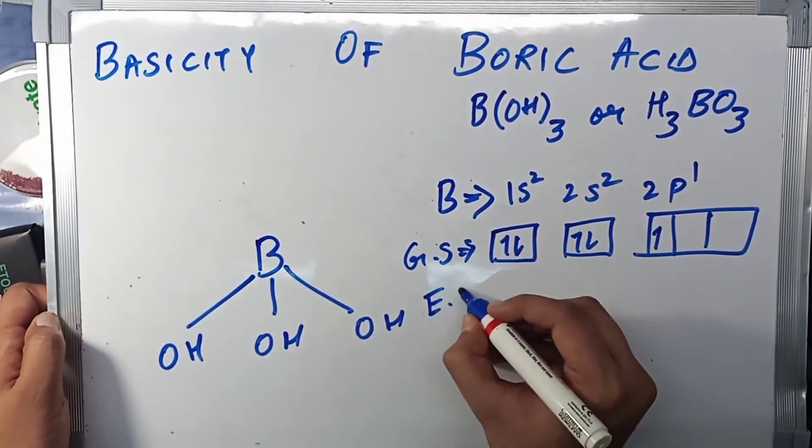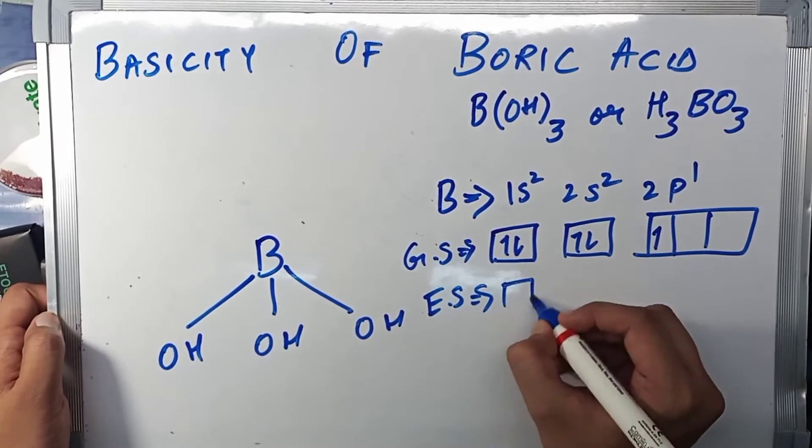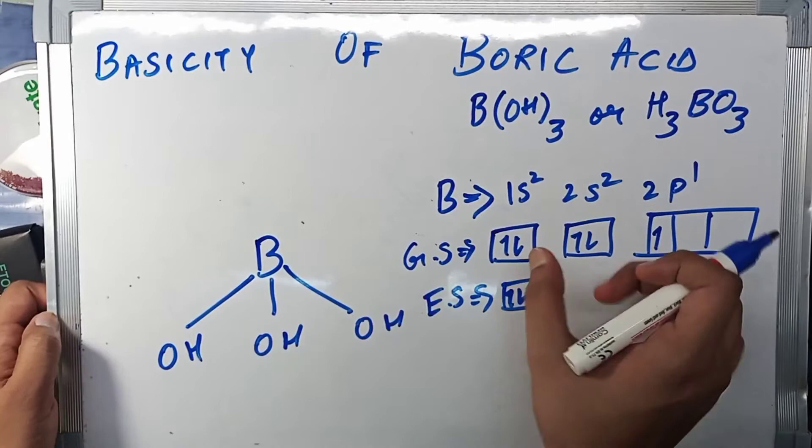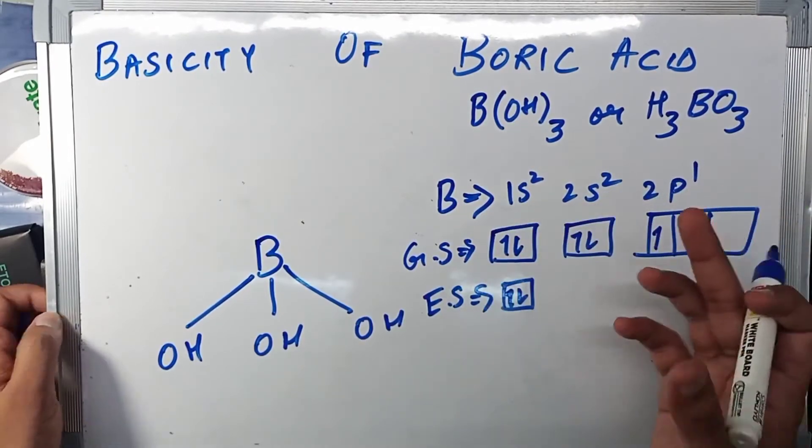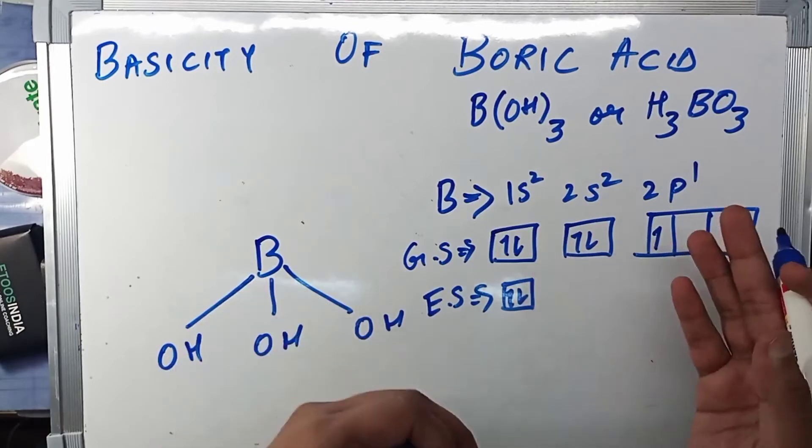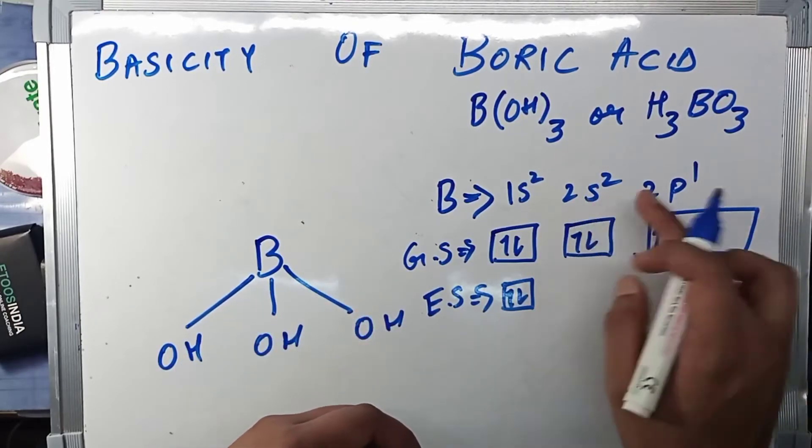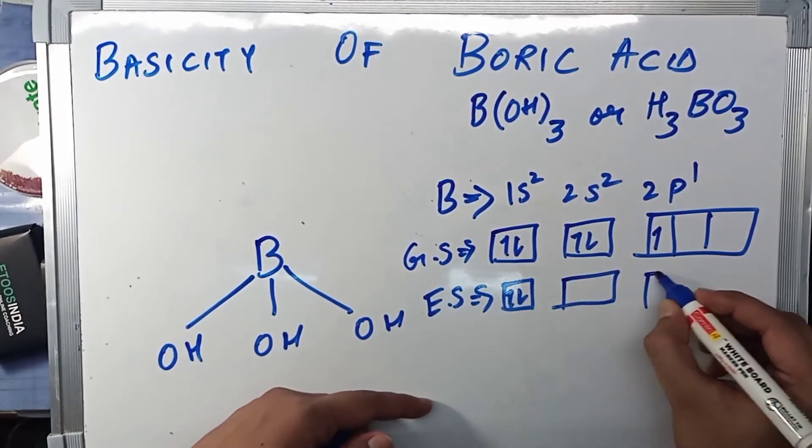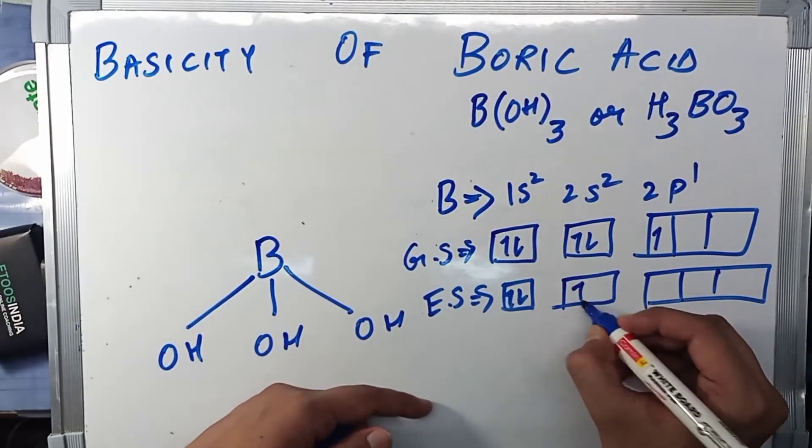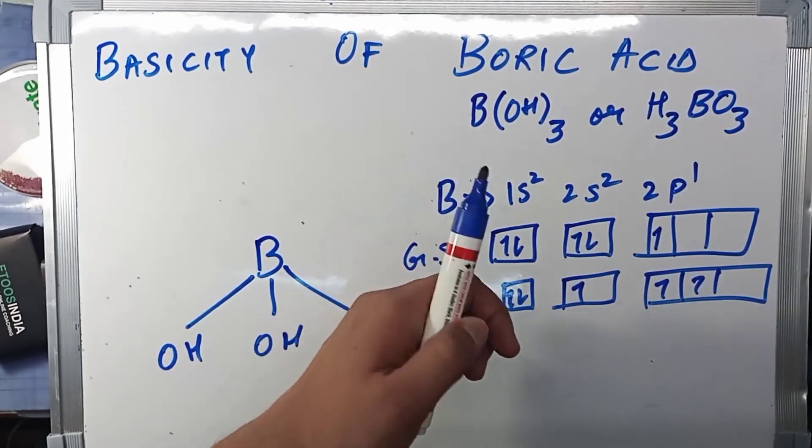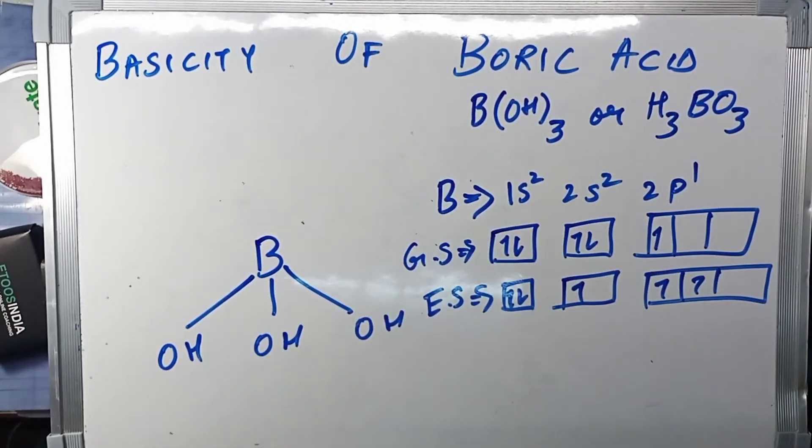What happens is that this electron jumps to the 2p subshell and boron reaches into an excited state. The 1s is not going to change because the energy difference between 1s and 2p is very high, very large. So the electron shifting or the electron jump can only occur between these two.